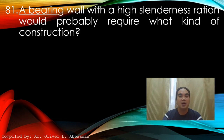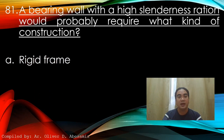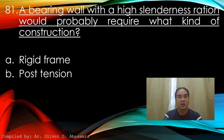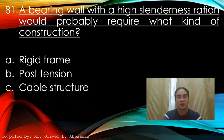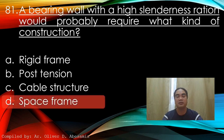Question 81: A bearing wall with a high slenderness ratio would probably require what kind of construction? A) Rigid frame, B) Post-tension, C) Cable structure, D) Space frame. Answer: D) Space frame.